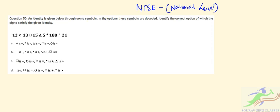In Question 50, we have been given an identity through some symbols. In the options, these symbols are decoded. Identify the correct option of which signs satisfy the given identity. Let's write the expression first and move through the options.